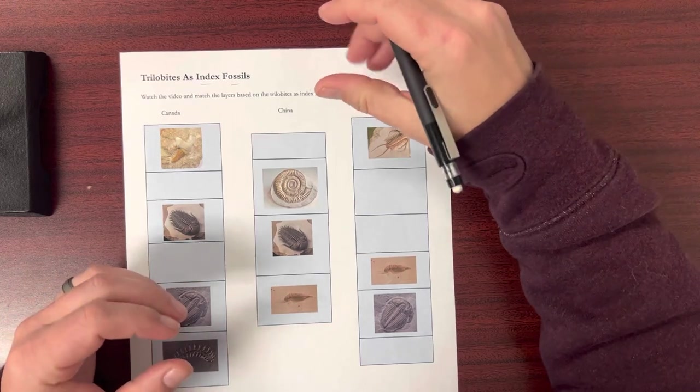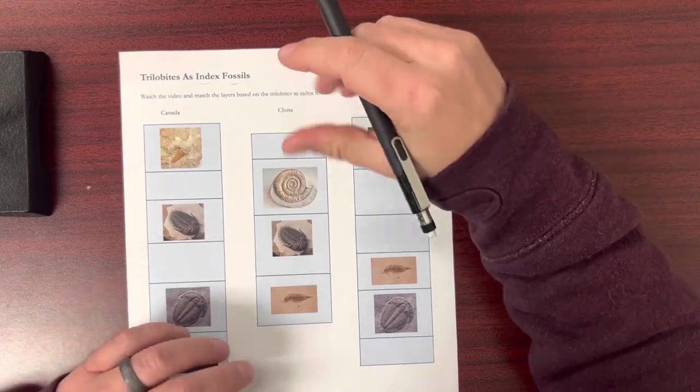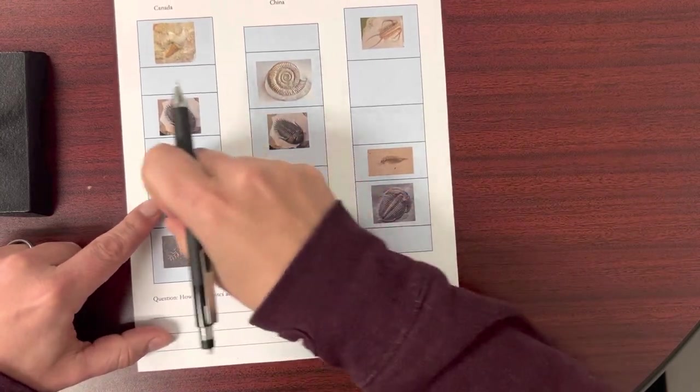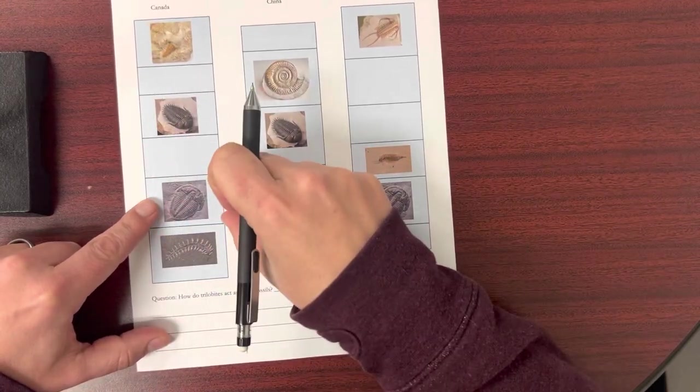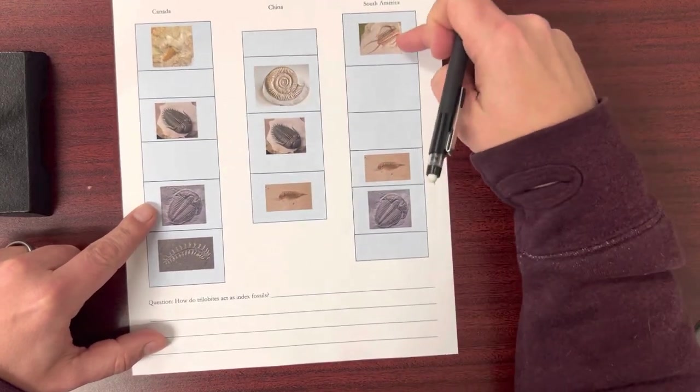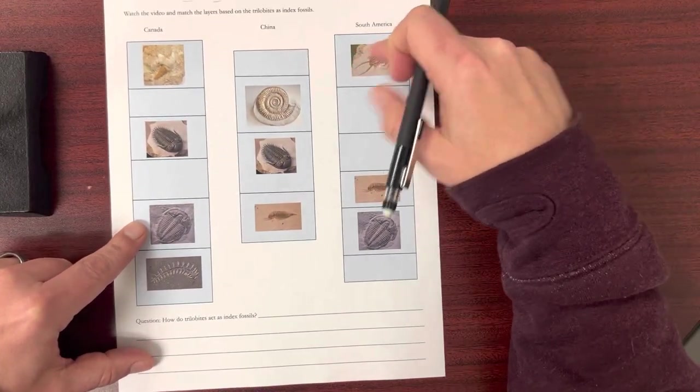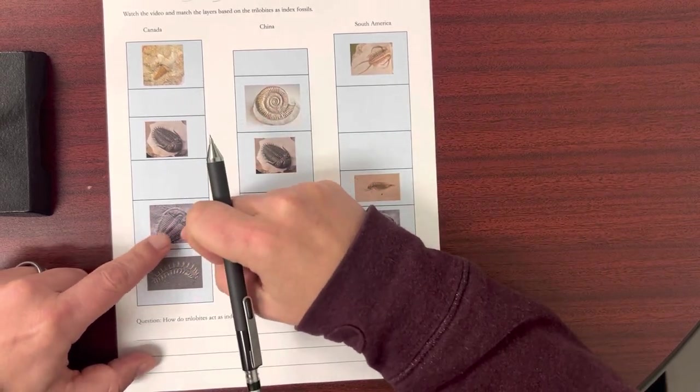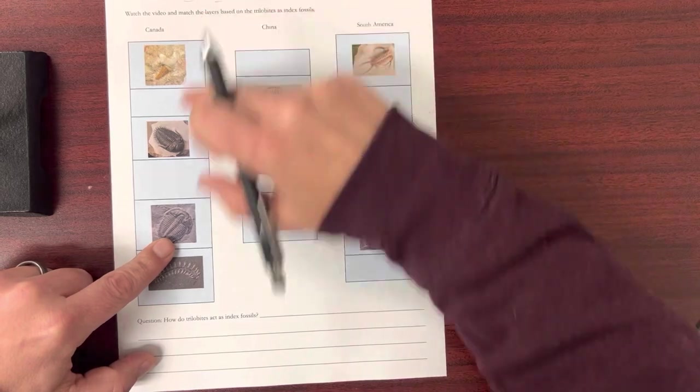They are found in a short vertical range, meaning my trilobite here, it's only found in this period of time. A different trilobite is found in another period of time, and another trilobite here is a different period of time. But they're of a short vertical range, so you don't see this same trilobite for hundreds of millions of years.